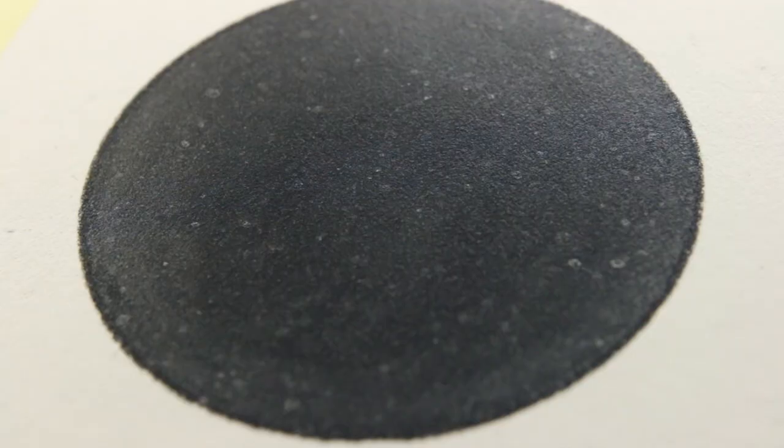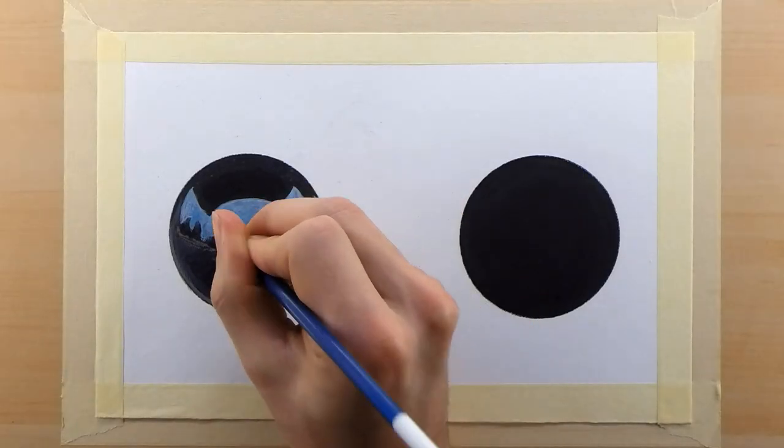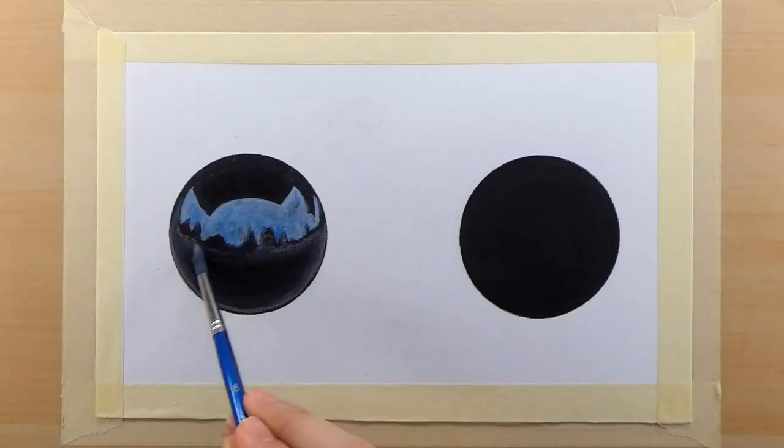You can see that the left circle has some white specks and kind of a fuzzy look to it, and I would say that's one of the drawbacks you get from using this textured fixative.